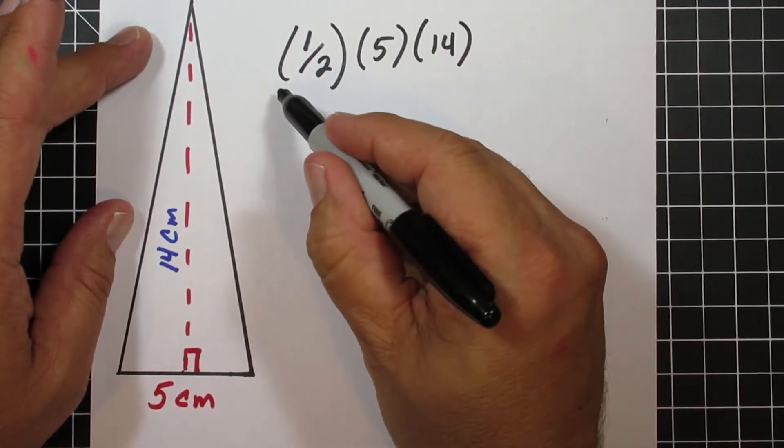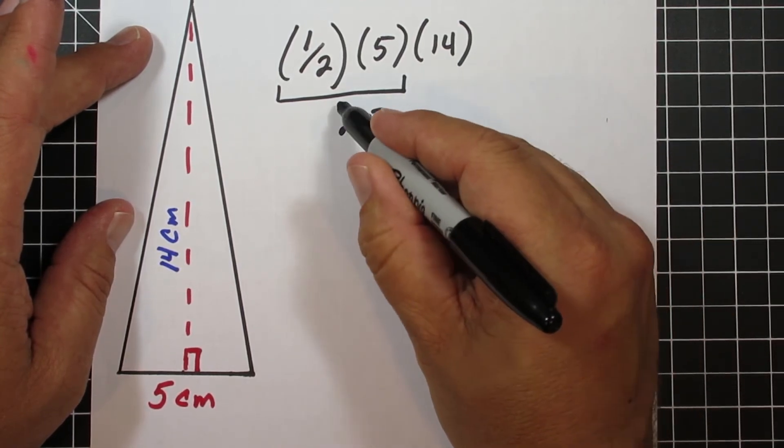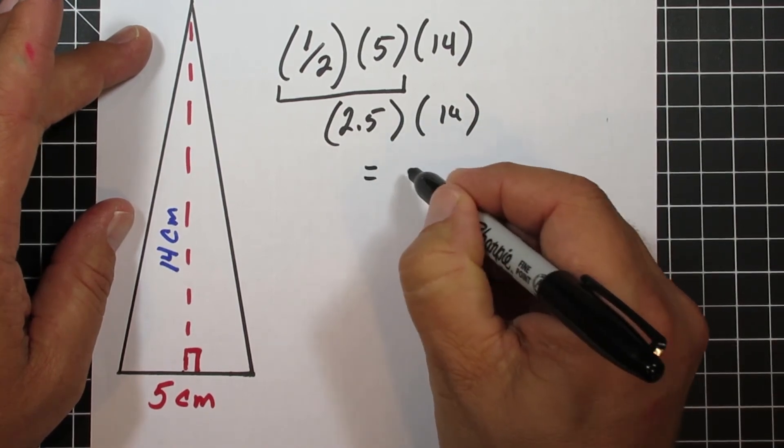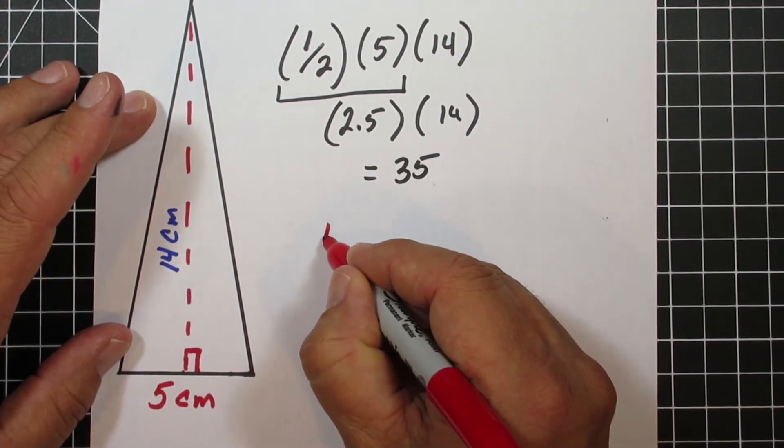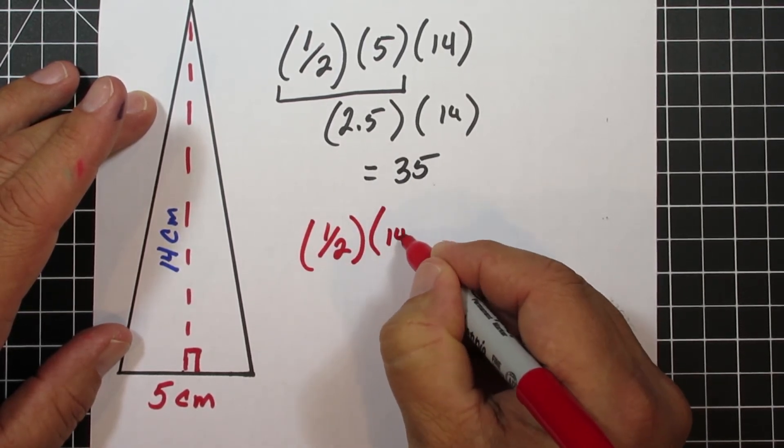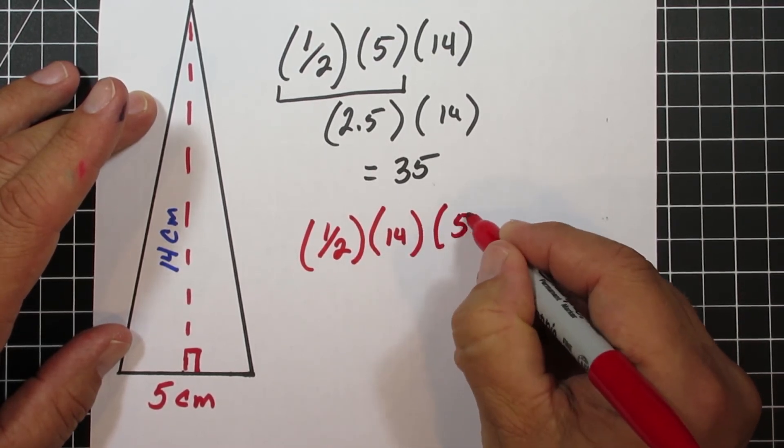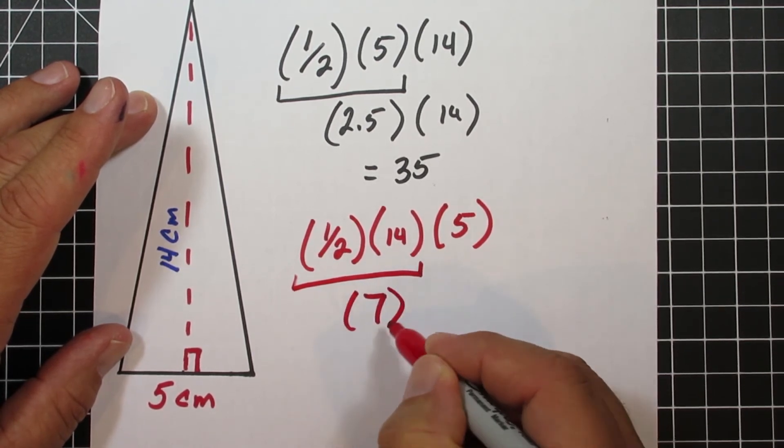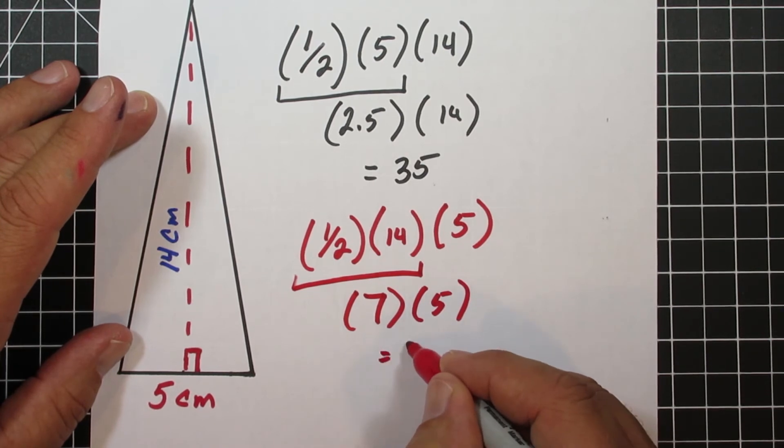Another thing is when you're calculating the area of the triangle, like in this example, you're going 1 half times 5. When you do that, you get the decimal 2.5, and so you have to take 2.5 times 14. If you would just merely rearrange the 5 and the 14 and make it 1 half times 14 times 5, when you take 1 half times 14, you get 7, and then it turns into 7 times 5. A much easier problem. You don't have to deal with any decimals, so you're allowed to rearrange numbers when you multiply. Take advantage of that if you can.